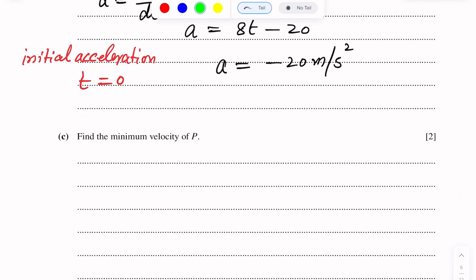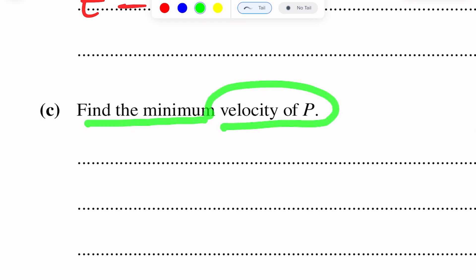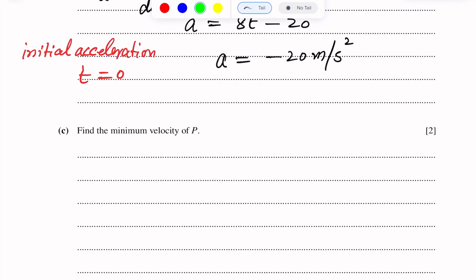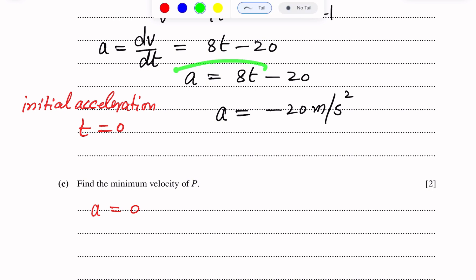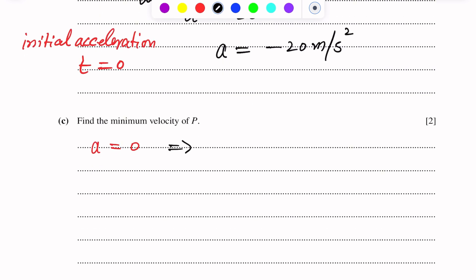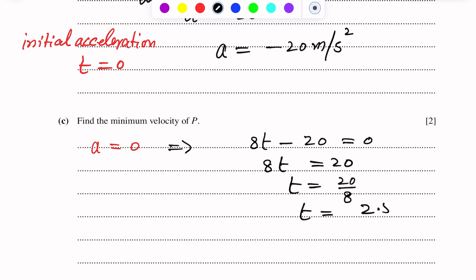Part C asks us to find the minimum velocity of P. For minimum or maximum speed, the acceleration is zero. Using the acceleration-time relation found above, we set 8t − 20 = 0, giving 8t = 20 and therefore t = 20/8 = 2.5 seconds.